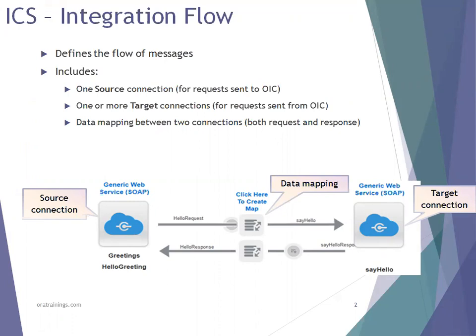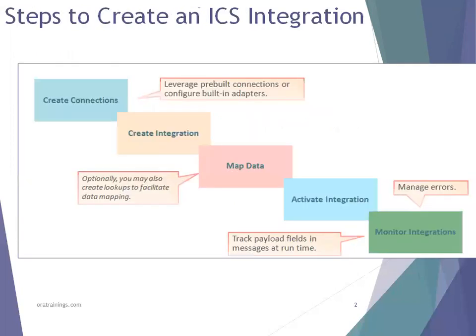The source connection will have appropriate mapping with the target connection. You'll be receiving some data into your ICS, and ICS will perform a transformation and send the data to the target environment. Basically, when you want to design an integration, you always require at least one connection — without a particular connection you cannot design any integration.